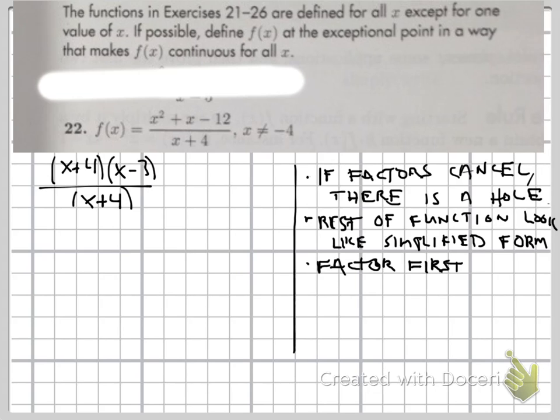And in this situation, which you see a lot when we talk about continuous functions and limits, these two factors cancel. And the simplified form is x minus 3, which means that every other point except for at x equals negative 4, the function will have the exact same values as if we had just had f of x equal to x minus 3 by itself.